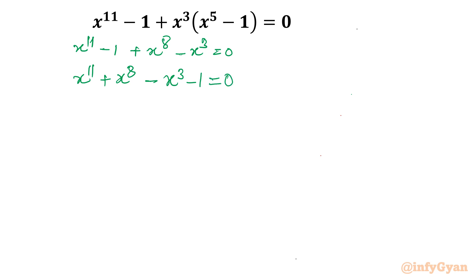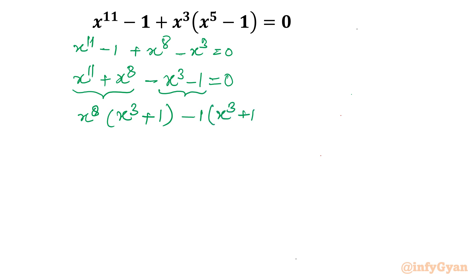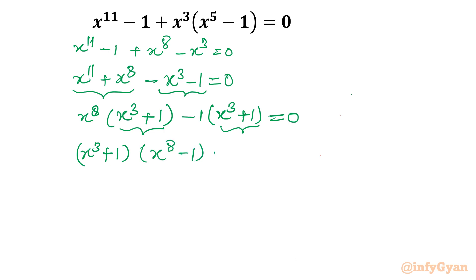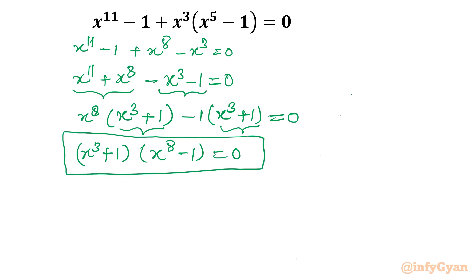Now from the first two terms we can take x^8 common. So I will write x^8 in bracket (x^3 plus 1), and minus 1 — if I take common from the last two terms, I can write (x^3 plus 1) equal to 0. You can see x^3 plus 1 appears twice, so I will take it out as a common factor. So (x^3 plus 1) times (x^8 minus 1) equal to 0. This is our factorized form of the degree-11 polynomial.